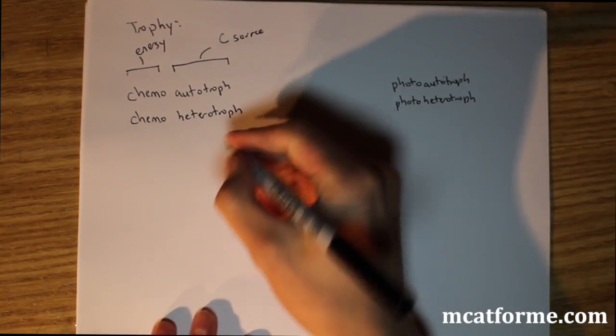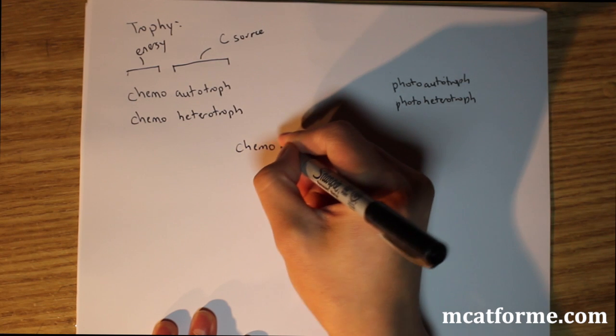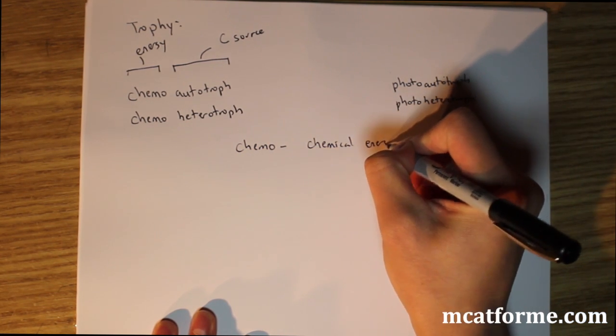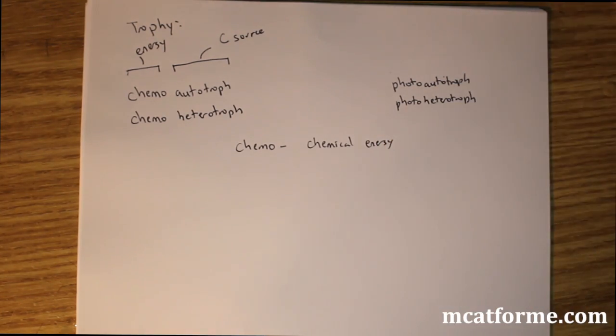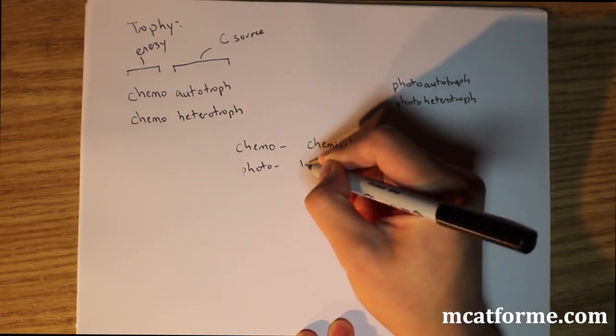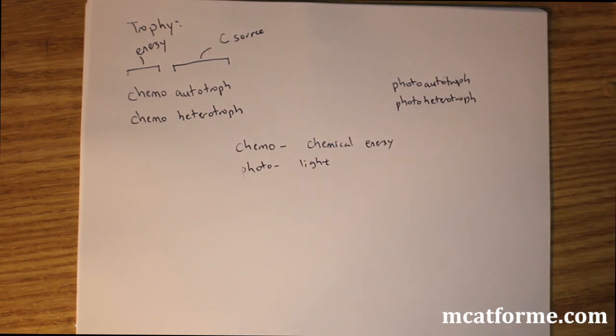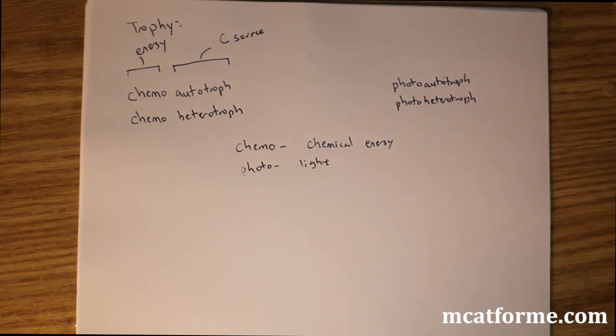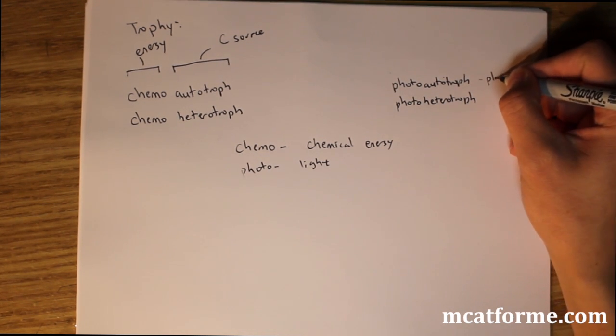So chemo means we get our energy from chemical means, so chemical energy. And photo means we get our energy from light. So I guess the most typical example of something that's photoautotroph would be plants. Plants would be a perfect example of photoautotroph.